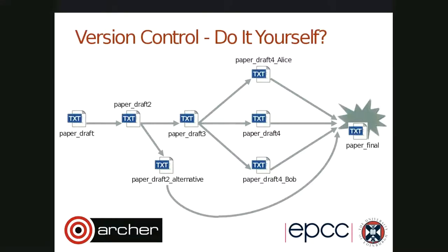So why do we need version control? It's really a question of workflow and how we manage files. Imagine having a text document like a publication you're writing. You start out with a paper draft and make some modifications to get draft version two. You could just keep adding to the same file, but at some point you might decide to make a drastic change and try a totally different structure.